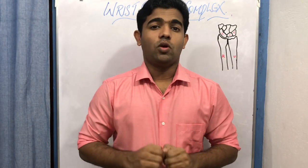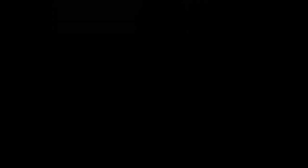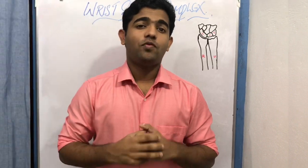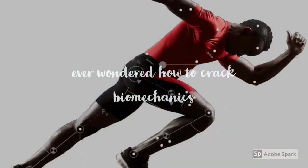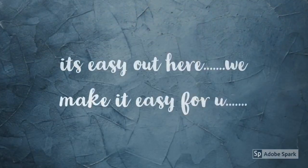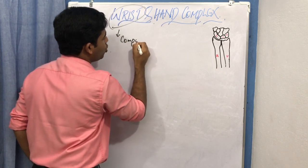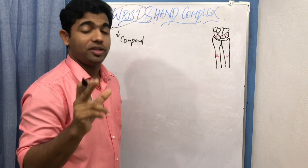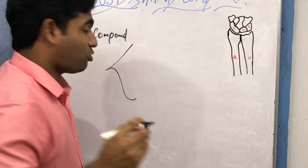In this video we will be seeing the wrist complex function, the structure of the wrist complex, the two joints seen in the wrist complex. The wrist complex is actually a compound joint because there are two individual joints in it, like the knee complex which was also a compound joint. The two joints in the wrist complex are the radiocarpal joint and the midcarpal joint.